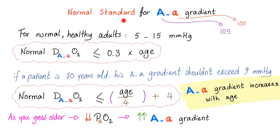Here's the normal standard for the AA gradient. The big A is around 105 mmHg and the small a is around 100, so subtracting gives 5. The range 5 to 15 is normal. But here's the age-adjusted formula: the AA gradient of oxygen should be equal to or less than 0.3 times the patient's age.